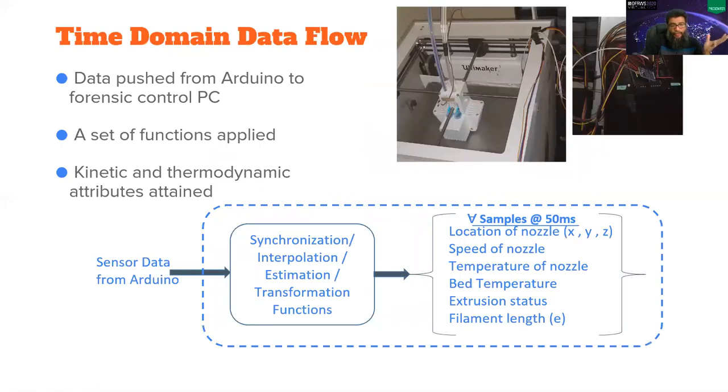Now, from Arduino, we send the data to the forensic control unit where we deploy synchronization, interpolation, estimation, and some transformation functions. And then we get a series of samples at 50 milliseconds where each sample is defined by a set of attributes such as the location of nozzle at the time of when the sample was created in XYZ, speed of the nozzle, temperature of the nozzle, temperature of the bed. At that time, extrusion status and the filament length.